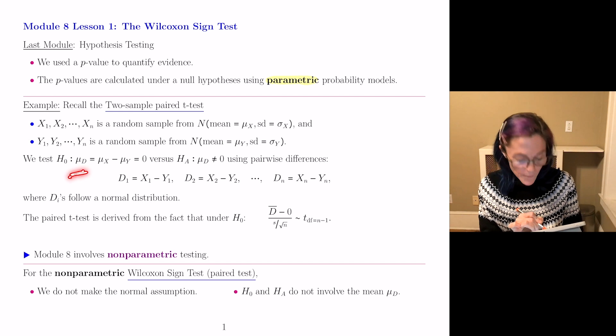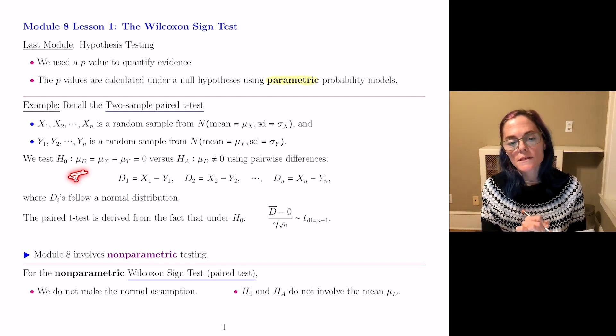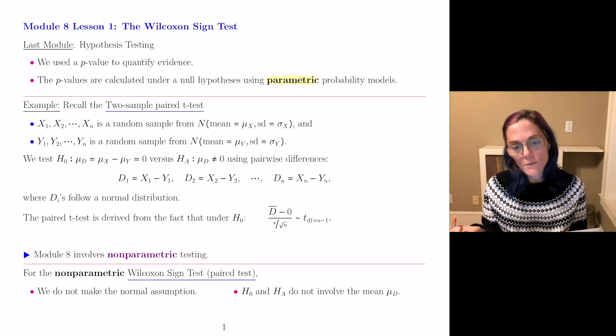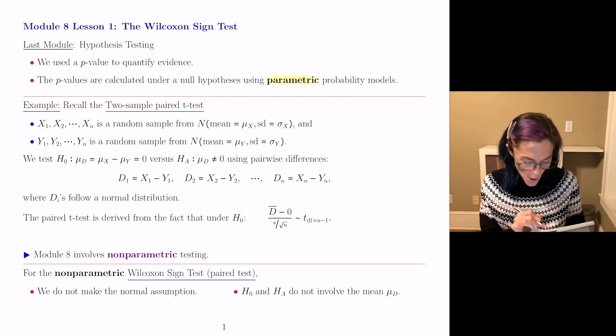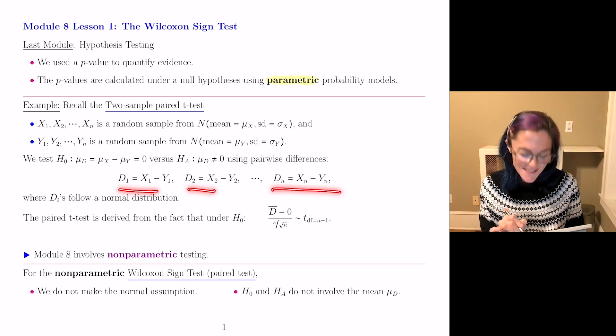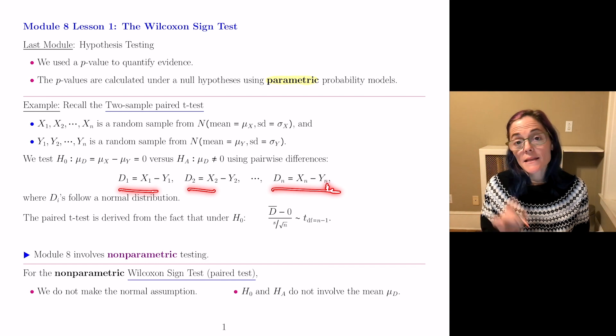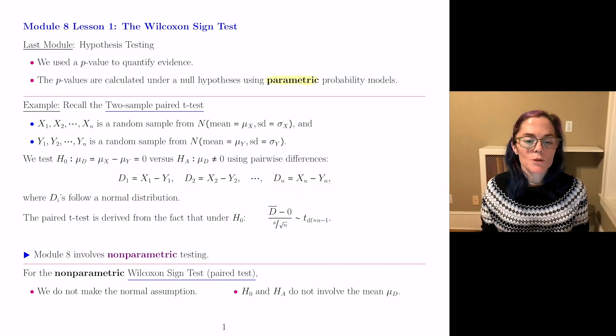For our null hypothesis, we tested μd equals zero versus, at least in the two-sided case, μd is not equal to zero, where we looked at these pairwise differences, D₁, D₂, out to Dₙ. The Di's follow a normal distribution.